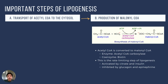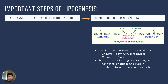The next step is to produce malonyl-coenzyme A. We have effectively transferred acetyl-coenzyme A from the matrix into the cytosol. The next step is to carboxylate — or add a molecule of carbon dioxide to — acetyl-coenzyme A. Acetyl-coenzyme A is converted to malonyl-coenzyme A by the enzyme acetyl-coenzyme A carboxylase, which requires biotin, or vitamin B7.